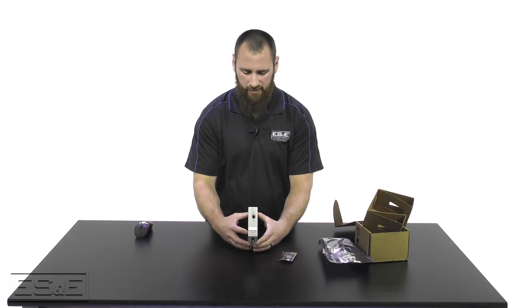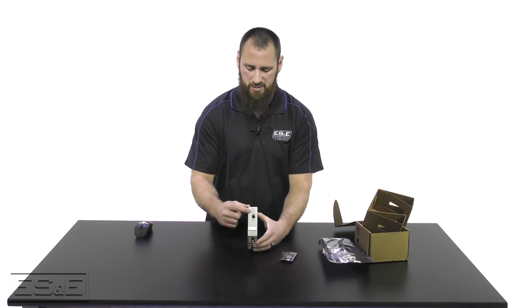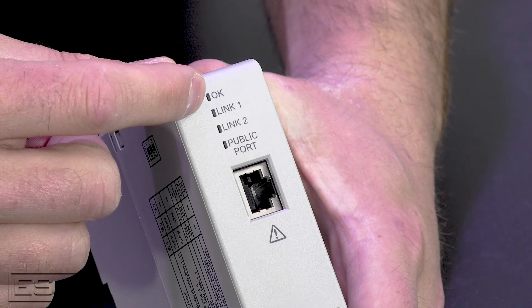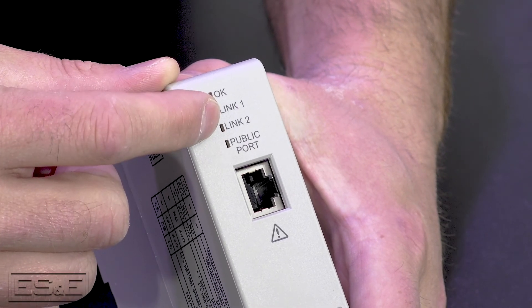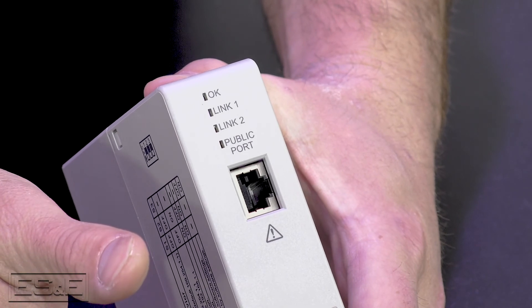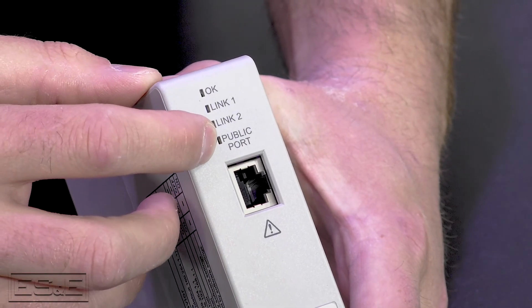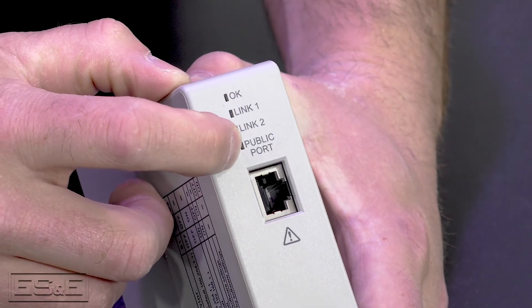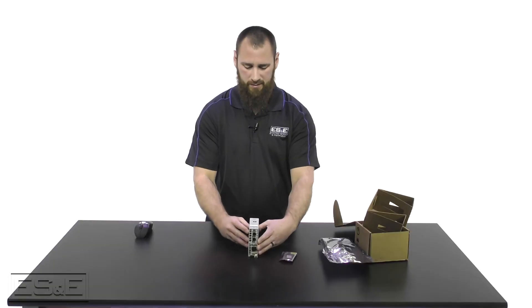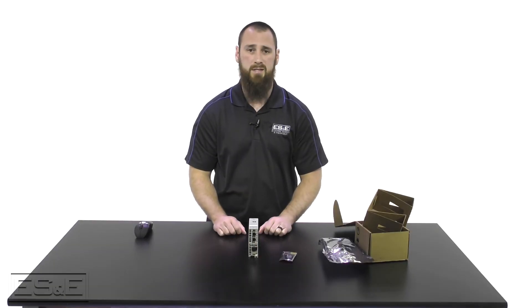The other thing you have on the NAT-R module, on the front face once you power it up, you will have the LED status indicators. So you have your OK light, your link one and link two, which are assigned to the two private ports and then your public port LED indicator. And that is our initial unboxing of the 1783 NAT-R module.